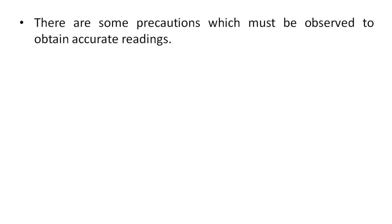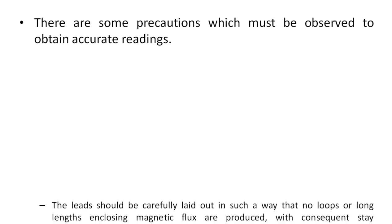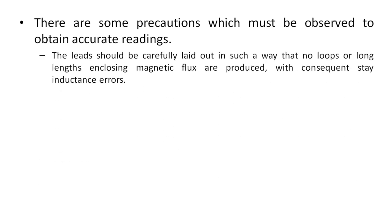Lead capacitance and lead inductance refer to the parasitic effects introduced by the contact leads we connect across a resistance, capacitor, or inductor. These leads provide some inductance and capacitance. That is why there are precautions we must observe to obtain accurate readings. The first precaution: leads should be carefully laid out so that no loops or long lengths are formed, which would close magnetic flux and produce stray inductance errors.